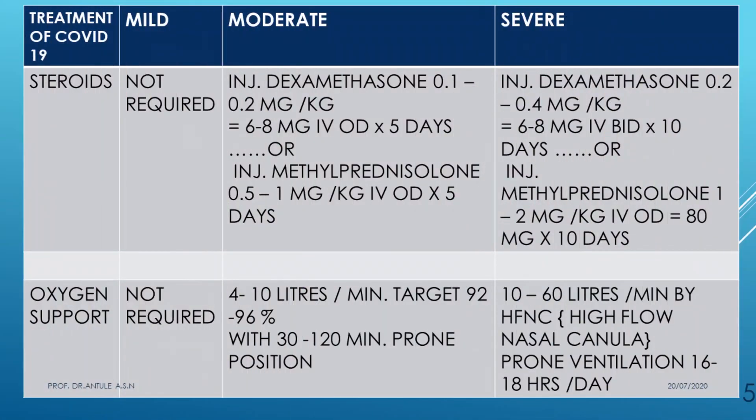Oxygen support is most important in COVID-19 treatment. Mild cases do not require oxygen. Moderate cases receive 4 to 10 liters of oxygen by nasal cannula or mask, with prone positioning for 30 to 120 minutes. Prone position helps because most alveoli lie posteriorly — prone positioning frees them of collected fluid and reduces resistance to airflow.